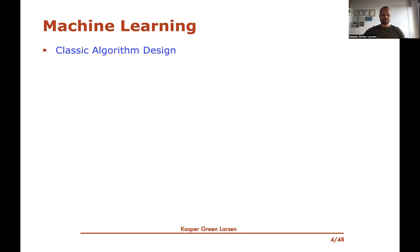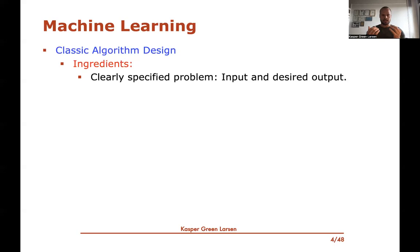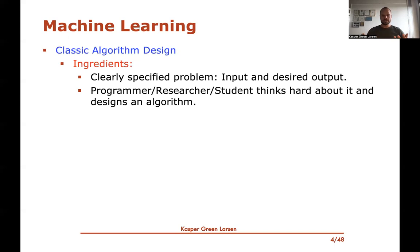Let's maybe first try to start by motivating why we want to do this. To do that, it might be good to go back and think about what is a classic algorithm — what is it that you learn in an introduction to algorithms course. In classic algorithm design, there's typically a very clearly specified problem: there's an input in some format, and then there's a desired output that you have to compute from this input. Then what often happens is that some researcher, a programmer, or a student thinks very hard about this algorithmic problem and designs an algorithm that solves the problem.